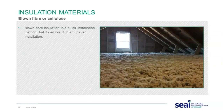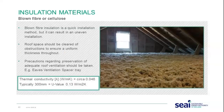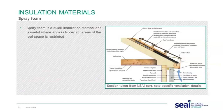Blown fibre or cellulose can be a quick installation method but can sometimes result in uneven insulation. The roof space should be cleared of obstructions to ensure a uniform thickness throughout. Precautions must be made for adequate roof ventilation — eave ventilation spacer trays are installed and are key to providing good ventilation to roof spaces. The thermal conductivity is roughly 0.046, and you would need 300 millimetres depth to achieve 0.13.